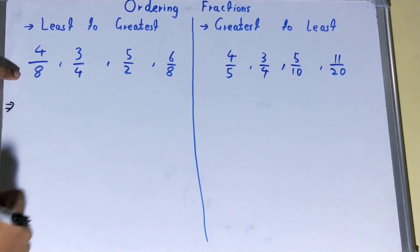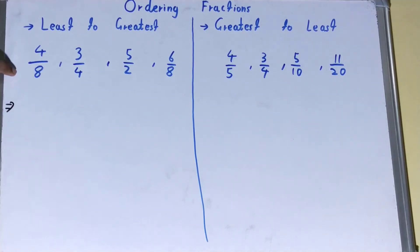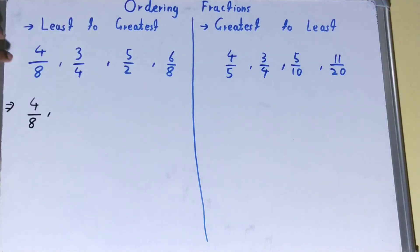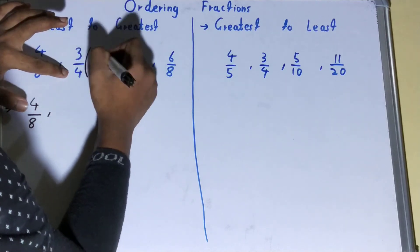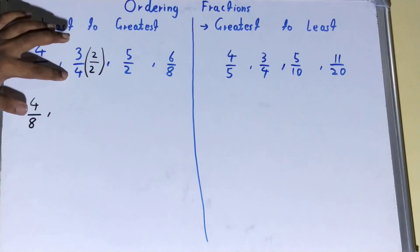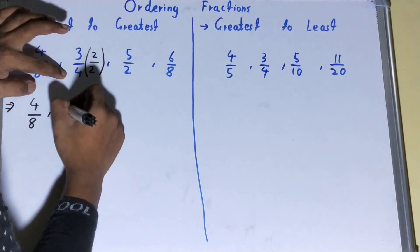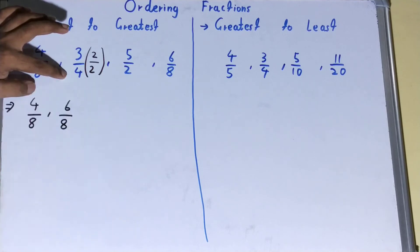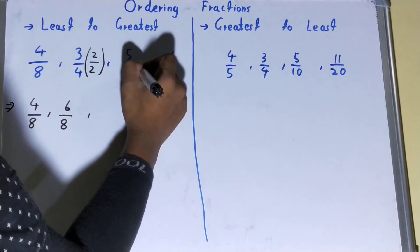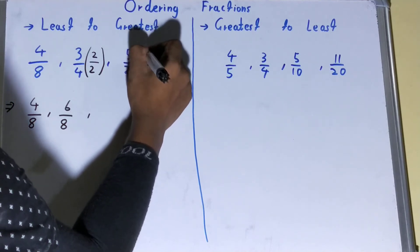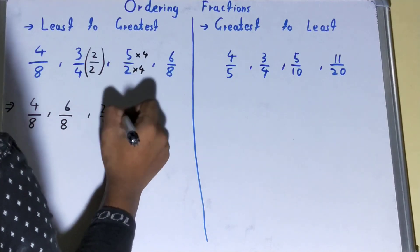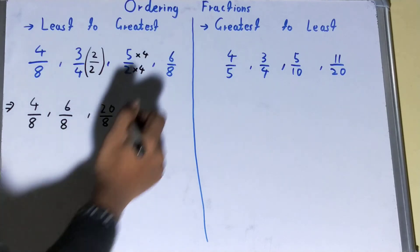The first fraction already has 8 as the denominator, so that's fine. The second fraction has 4 as the denominator, so we multiply the numerator and denominator by 2 — it becomes 6 over 8. The third fraction has 2 as the denominator, so we multiply by 4 — it becomes 20 over 8. The last one already has 8 as the denominator.